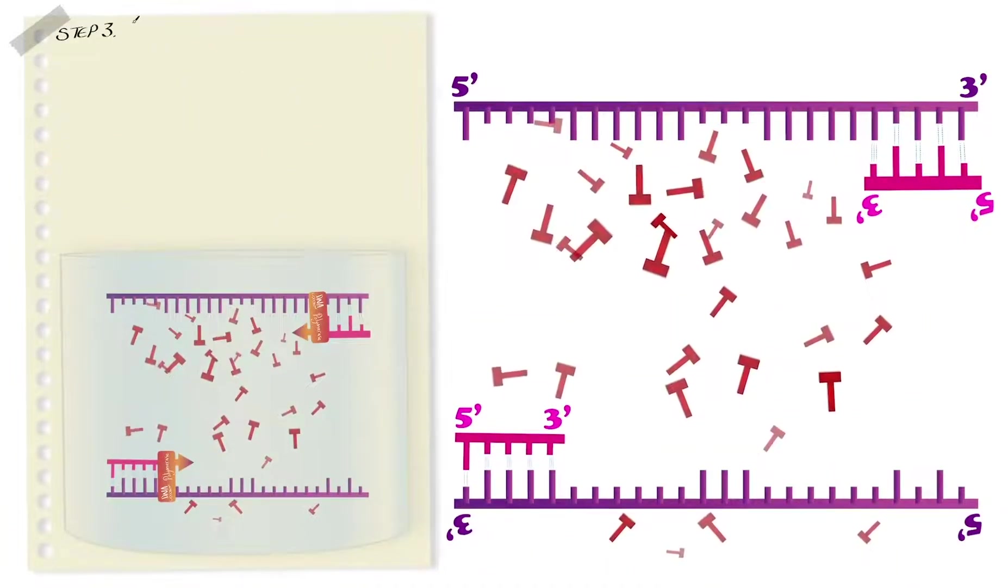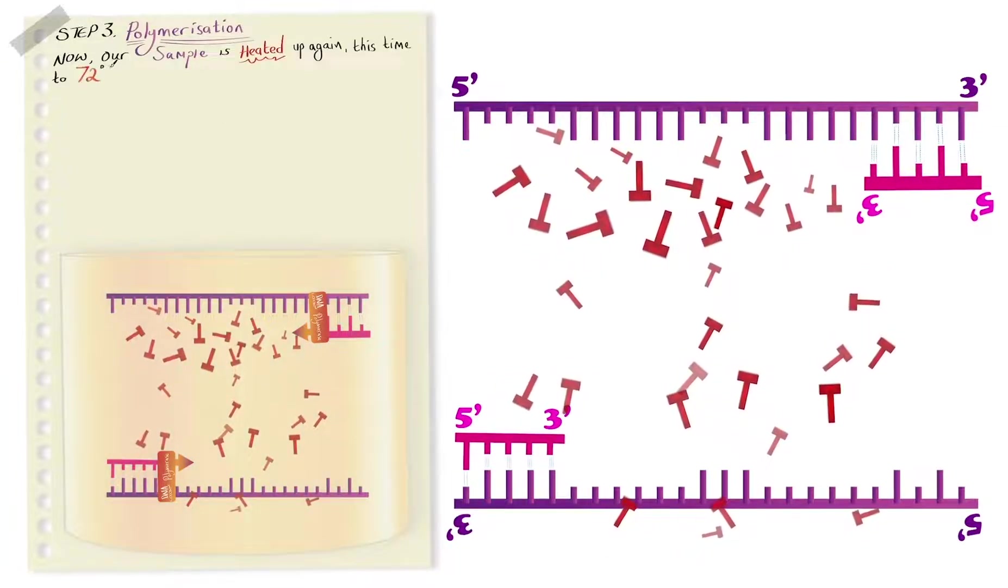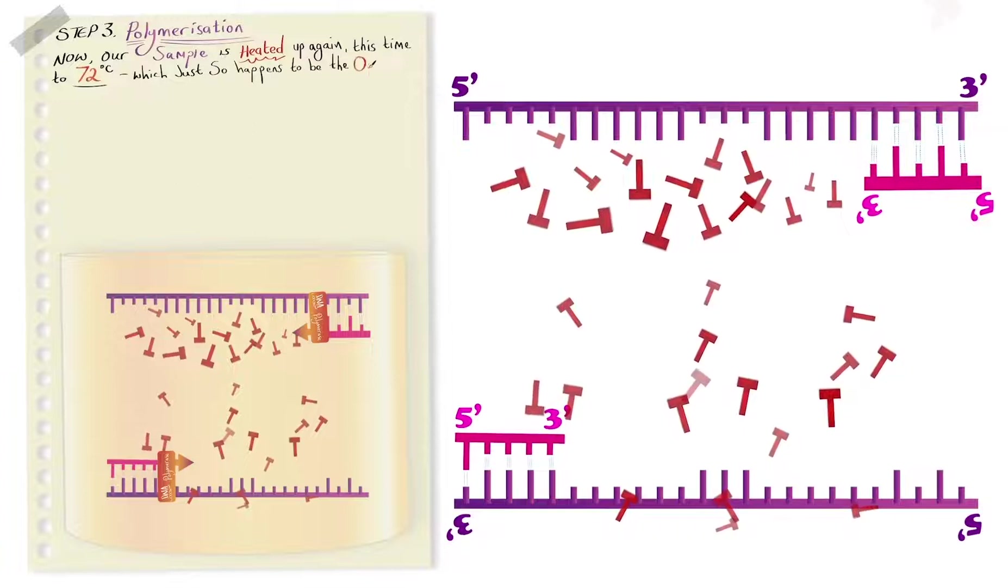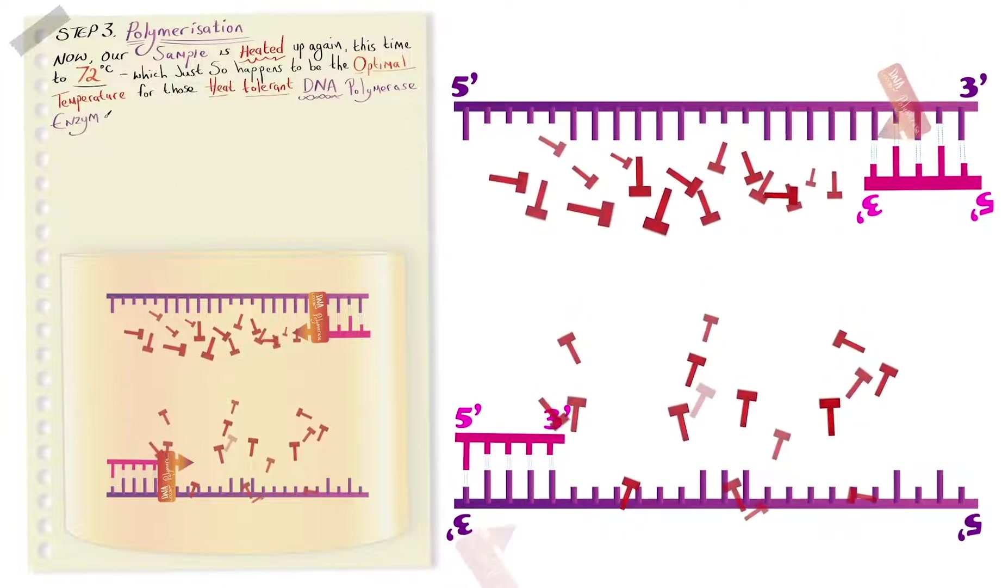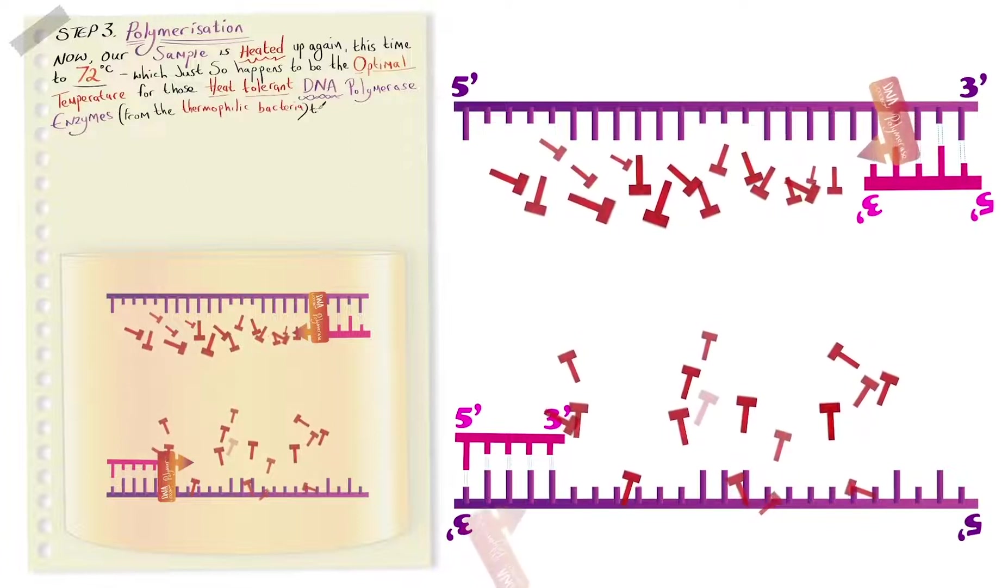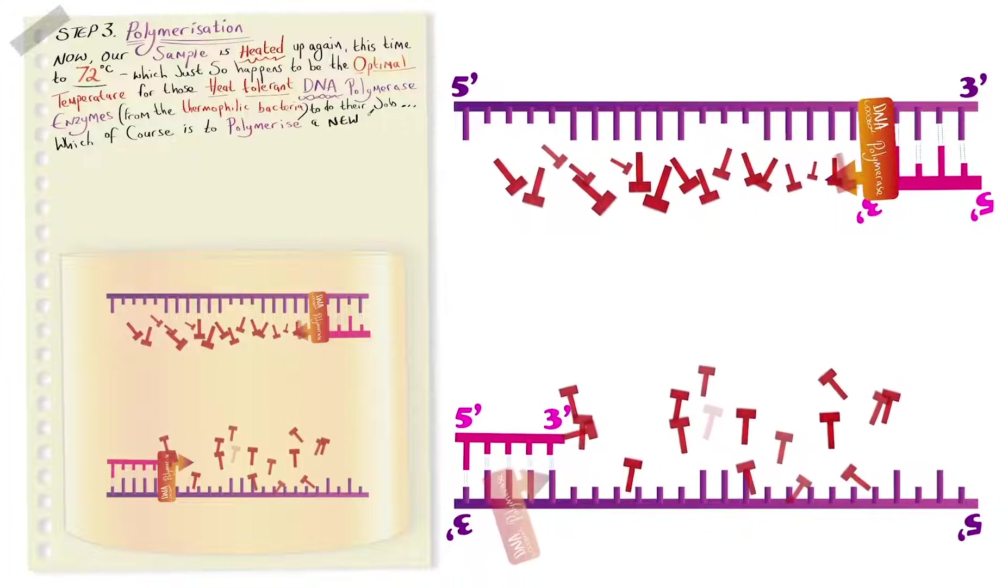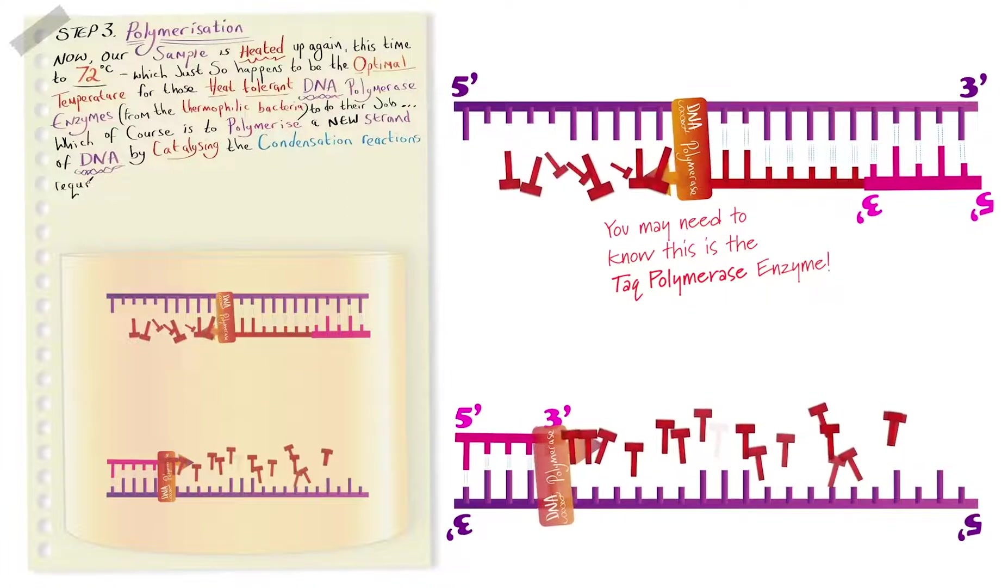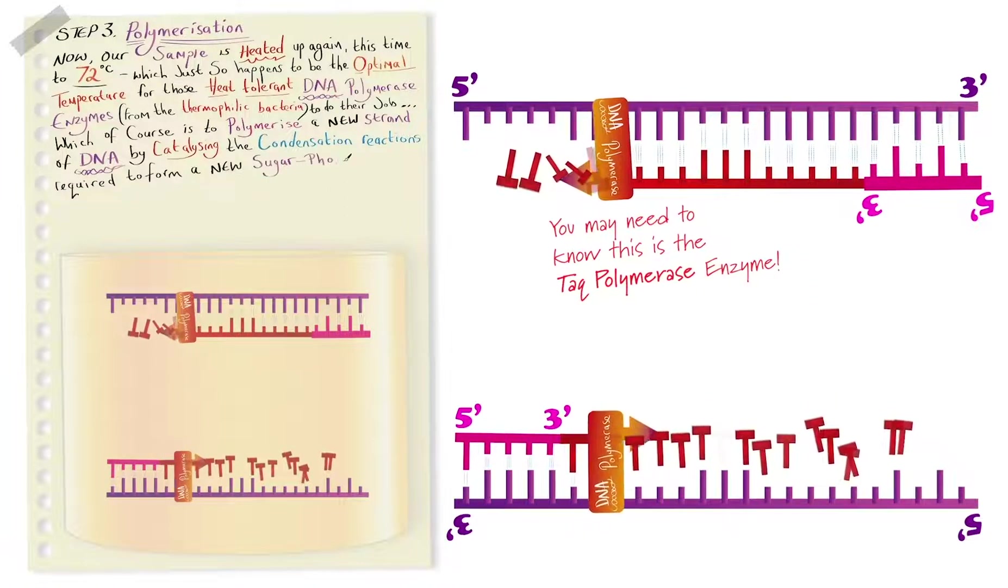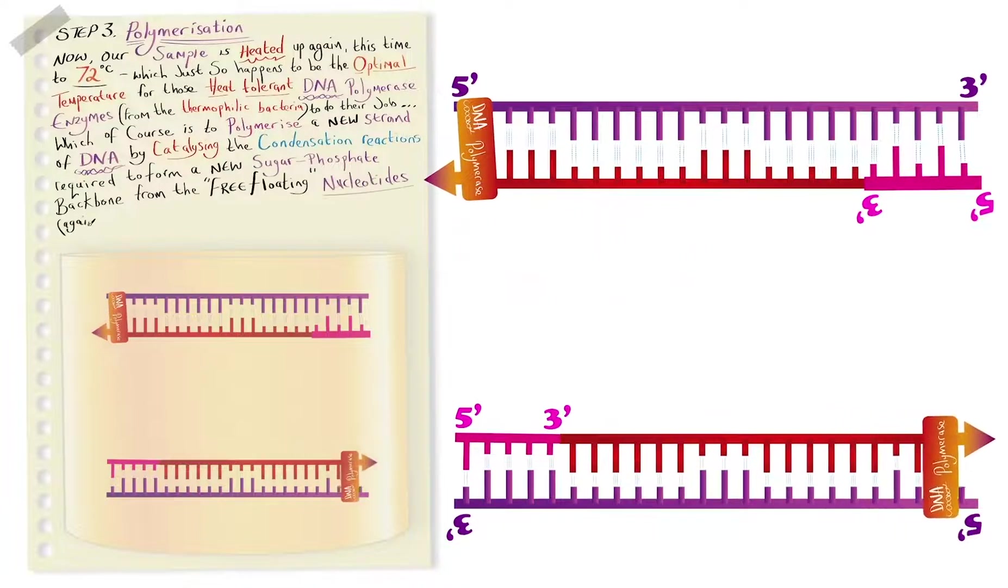Finally we have step three, polymerization and now our sample is heated up again, this time to 72 degrees C, which just so happens to be the optimal temperature for those heat tolerant DNA polymerase enzymes from the thermophilic bacteria so they can do their job, which is of course to polymerize a new strand of DNA by catalyzing the condensation reactions required to form a new sugar phosphate backbone from the free floating nucleotides. Again you've got to remember semi-conservative replication.